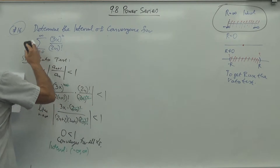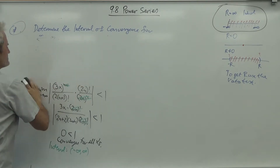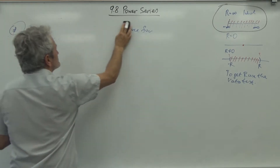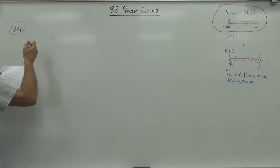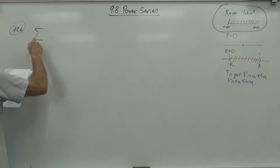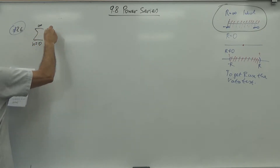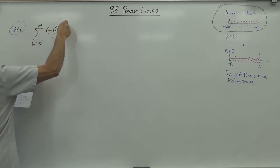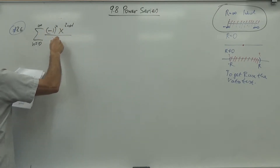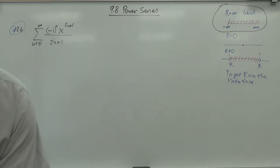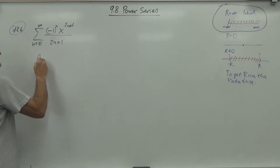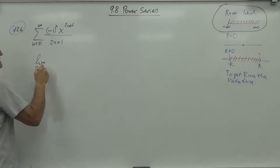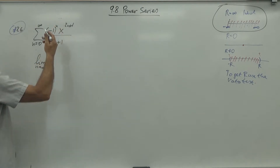Here is something more interesting: problem number 26. The sum from n=0 to infinity of (-1)^n times x^(2n+1) over (2n+1). We set up the ratio test and take the limit as n goes to infinity of the absolute value of the ratio. Since it's an absolute value, we can disregard the sign from (-1)^n.